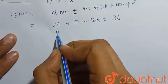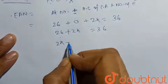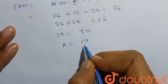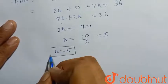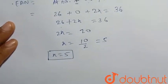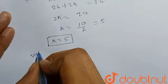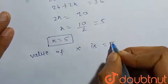So 26 plus 2x equals 36. So 2x equals 10. So x equals 10 by 2, which is equal to 5. So x will be equal to 5. So value of x is 5.